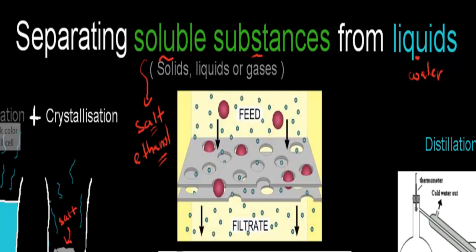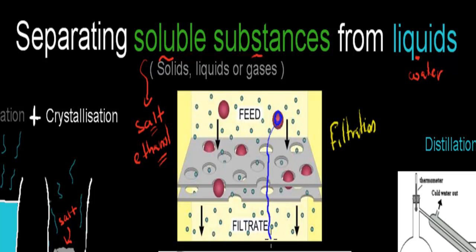We can't use filtration — this picture here to the left shows the idea of filtration — and the reason why we can't use that is because salt particles would be so small that they would also be able to squeeze through the filter, just like water would. So we would have both water and salt squeezing through, whereas if we had mud, only water would be able to squeeze through. Because these salt particles are so tiny, we can't trap them in a filter, so filtering wouldn't work.